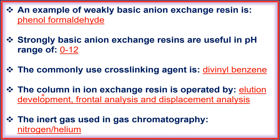The column in ion exchange resin is operated by elution development, frontal analysis, and displacement analysis. The inert gases used in gas chromatography are nitrogen and helium.